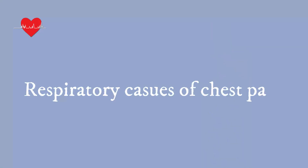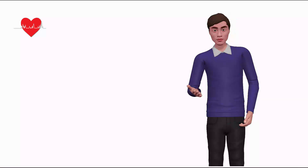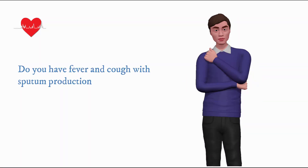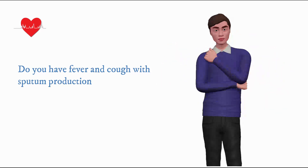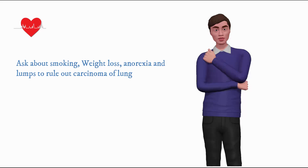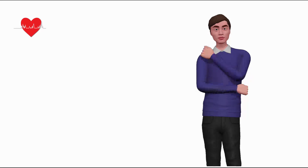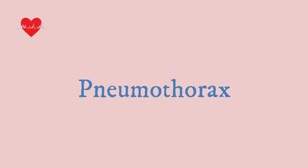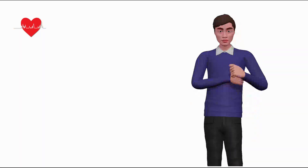Next, ask questions to rule out respiratory causes of chest pain. First, rule out chest infection — ask: do you have fever and cough with sputum production along with chest pain? Ask about smoking, weight loss, anorexia, and lumps to rule out carcinoma of the lung. Ask to rule out herpes infection: do you have blistering lesions on your chest wall? Ask about recent injury or trauma on the chest. To rule out pneumothorax, ask: did you lift heavy weight?